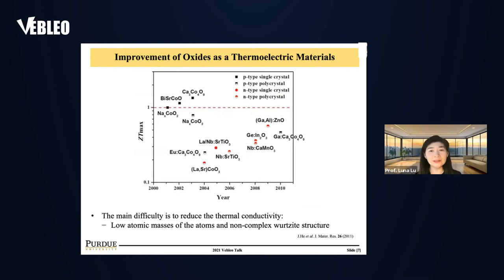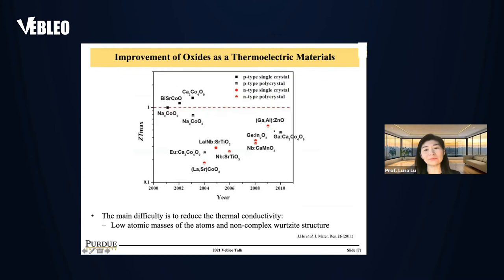Looking at some previous work from the early 2000s, there was tremendous work on cobalt oxides, and sodium-doped cobalt oxide was found to be a very good P-type material. On the N-type side, gallium-aluminum co-doped zinc oxide has been shown to be a good N-type material.